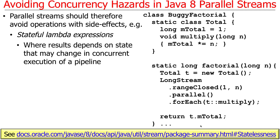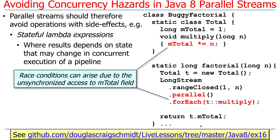The classic way to get yourself into trouble is to use so-called stateful lambda expressions, where the results depend on state which could change during concurrent or parallel execution of a pipeline — in a parallel stream, or just in concurrency in general. Here's an example of where we get ourselves into trouble.